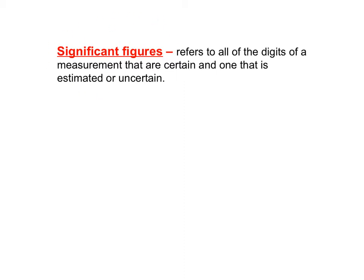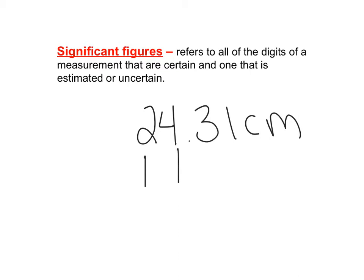Significant figures are all digits in a measurement that are estimated or certain. If you take a ruler and measure 24.31 centimeters, the 2, the 4, and the 3 are all certain digits, and the last digit of the measurement is an estimate. But all of those digits are significant figures.